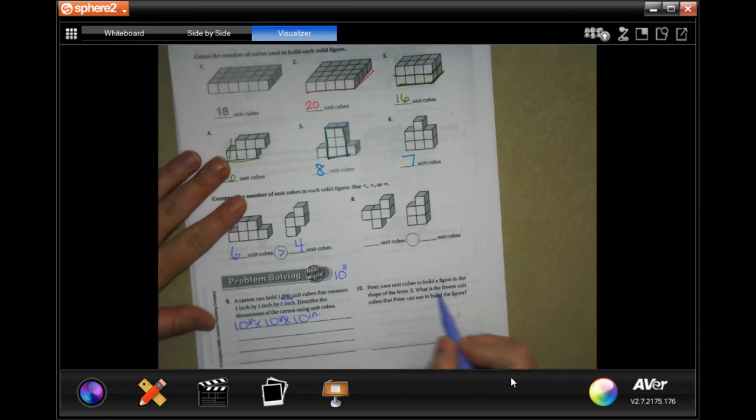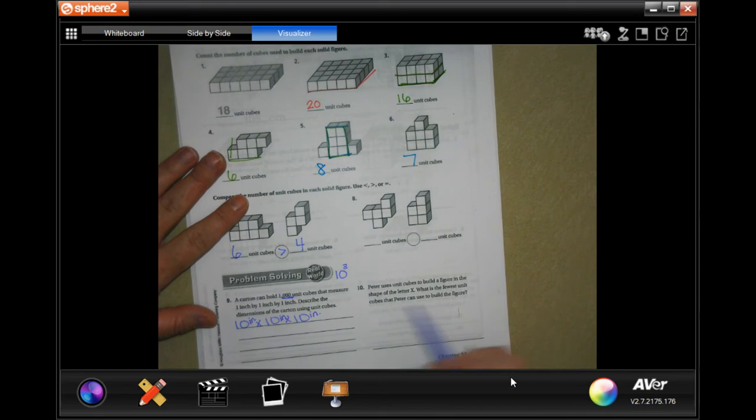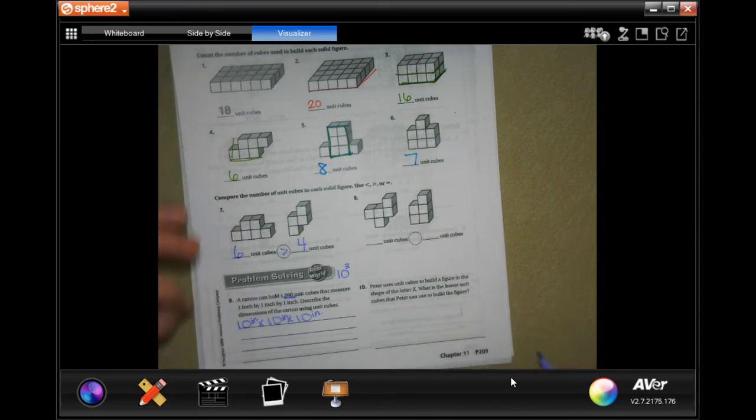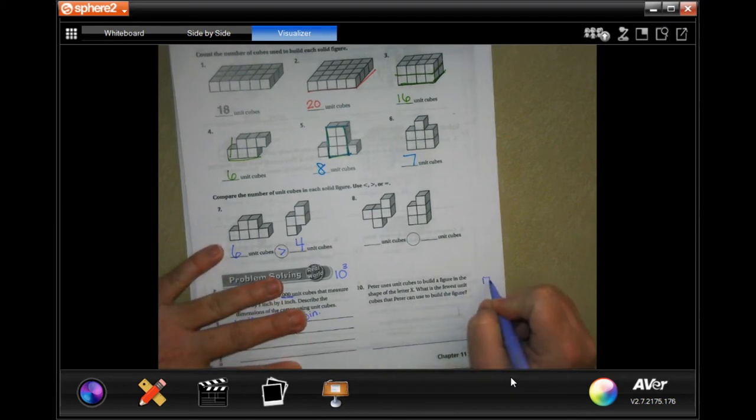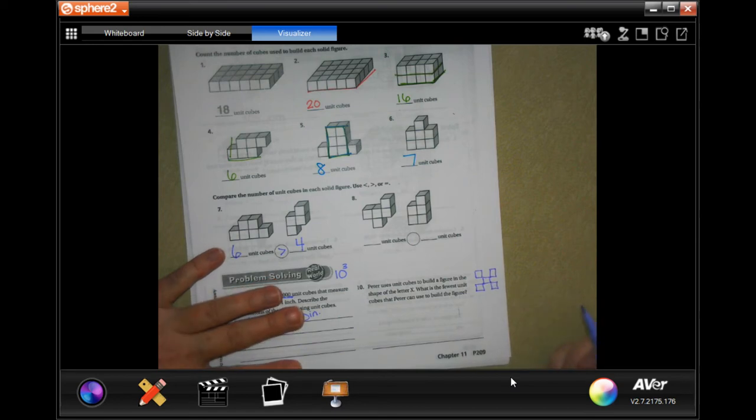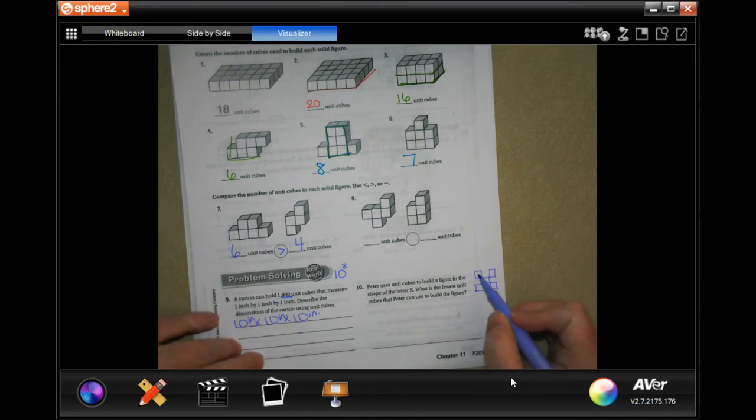Peter uses unit cubes to build a figure in the shape of the letter X. What is the fewest unit cubes Peter can use to build the figure? Well, let's do it. That's the smallest X that I can make. So, that's 1, 2, 3, 4, 5 cubes.